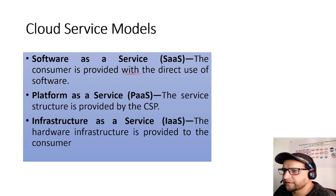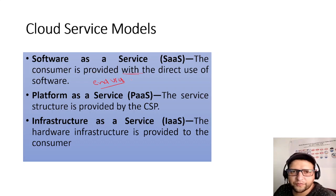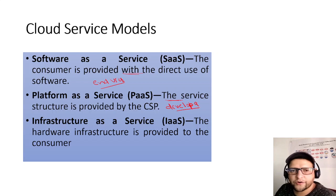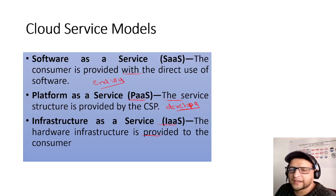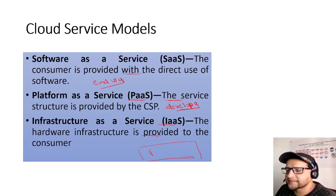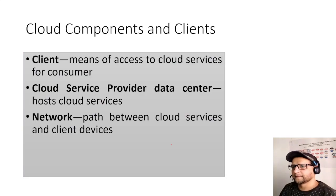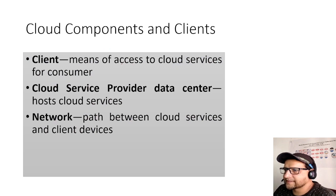The cloud service models are: Software as a Service, where an end user pays for software like Office 365 on a monthly basis; Platform as a Service, where a developer gets a platform to develop applications without worrying about network or security — all handled by the CSP; and Infrastructure as a Service, where the hardware infrastructure is provided to the consumer, who can customize the network, subnets, services, and communication — offering the most customization.